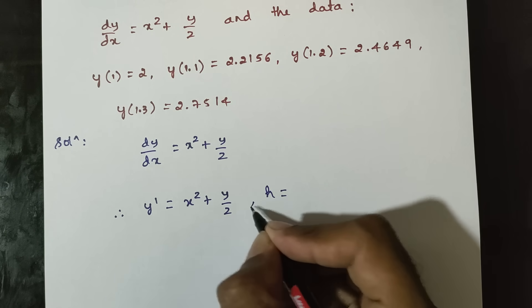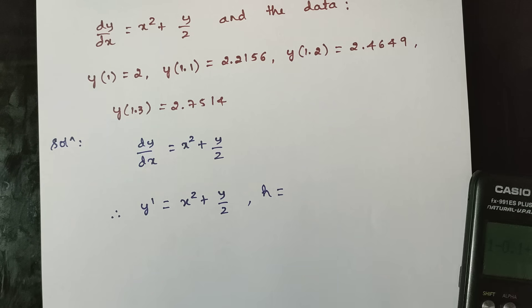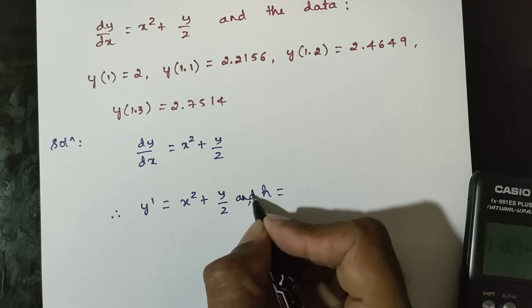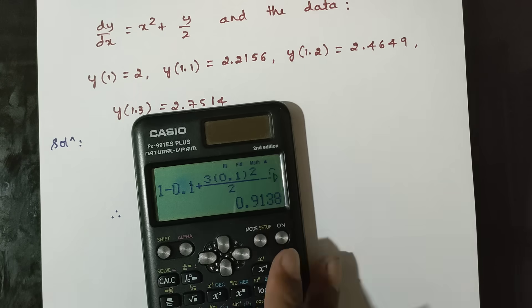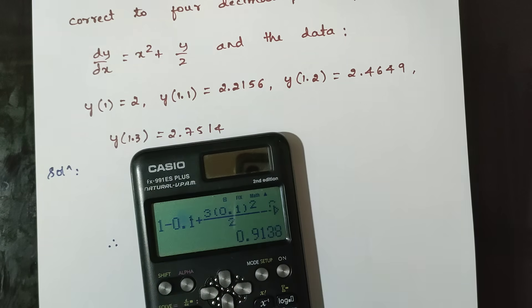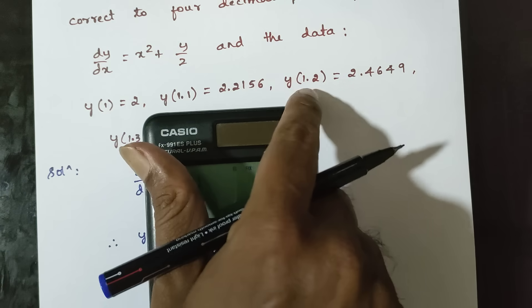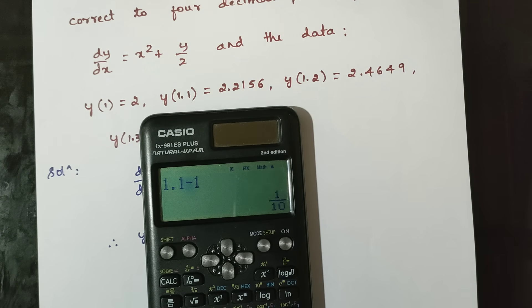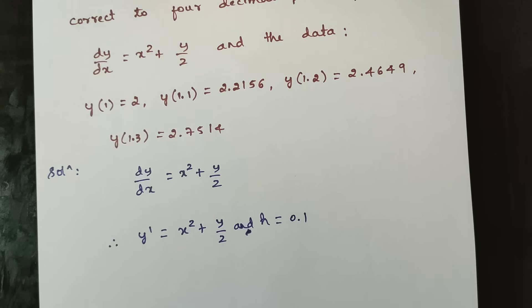h is equal to 1.1 minus 1, that is 1.2 minus 1.1, so h is equal to 0.1.